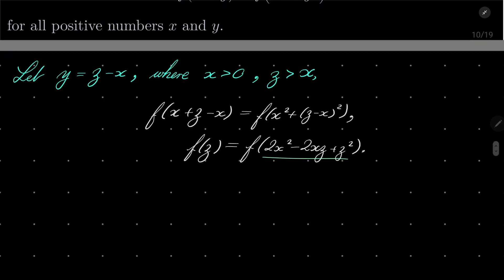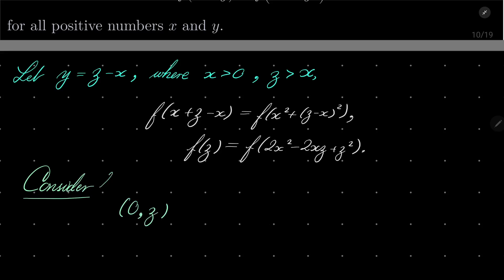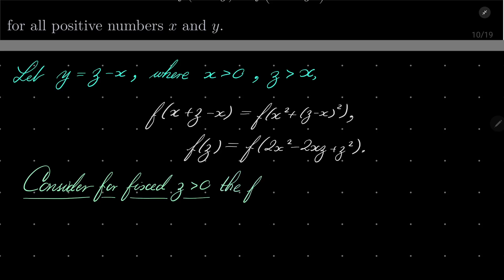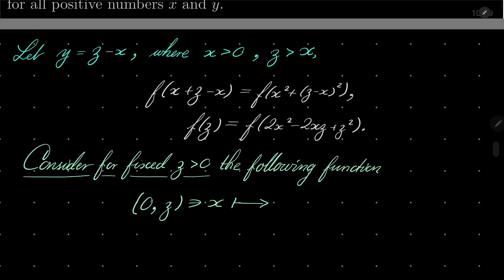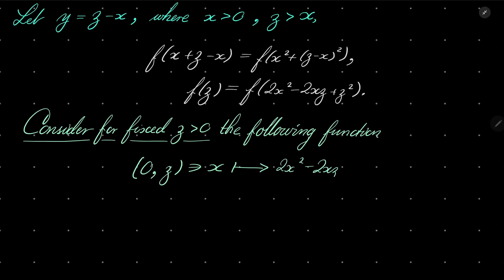Now I wish to investigate the range of this function. For a fixed positive number z, let's look at the function which takes a real number x between 0 and z, and maps it to 2x² - 2xz + z², which is real. What's the range of this function?